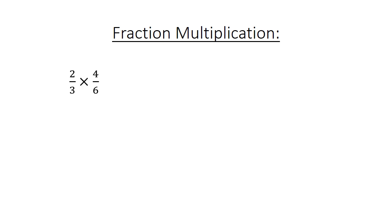Fraction multiplication: 2 over 3 times 4 over 6. 2 times 4 equals 8, and 3 times 6 equals 18, giving 8 over 18. Simplify to 4 over 9.